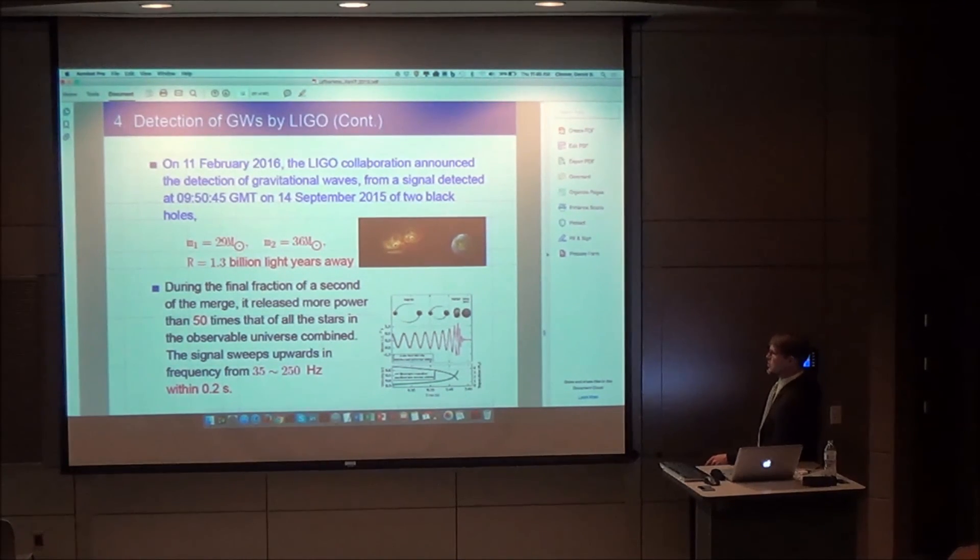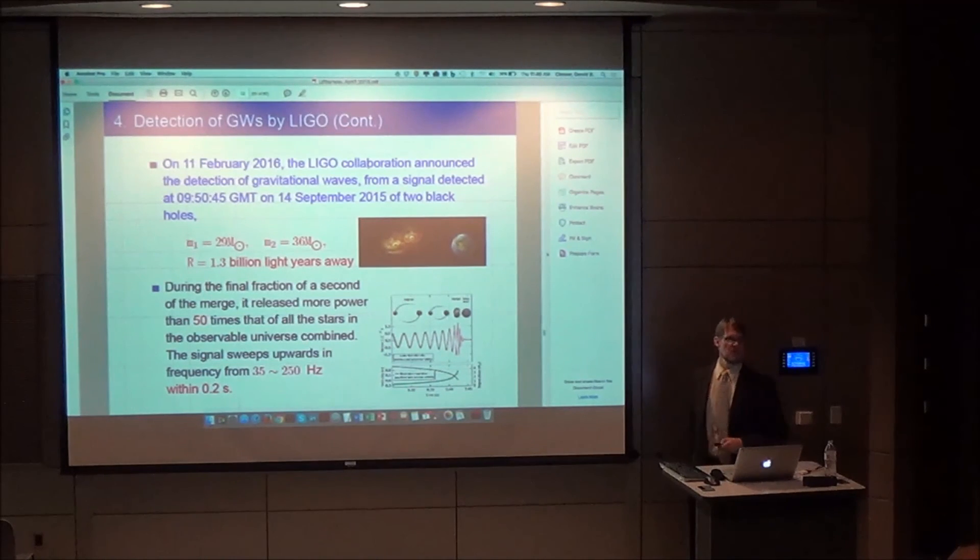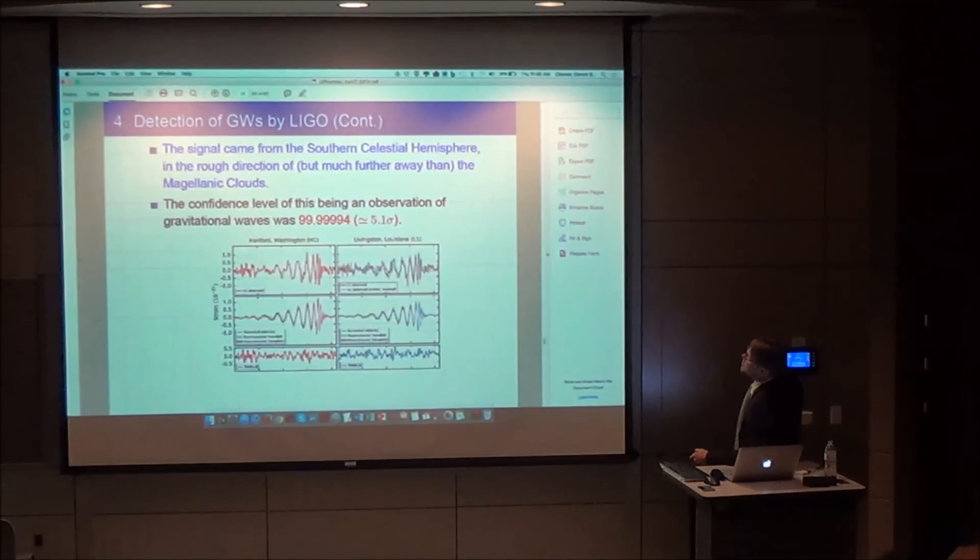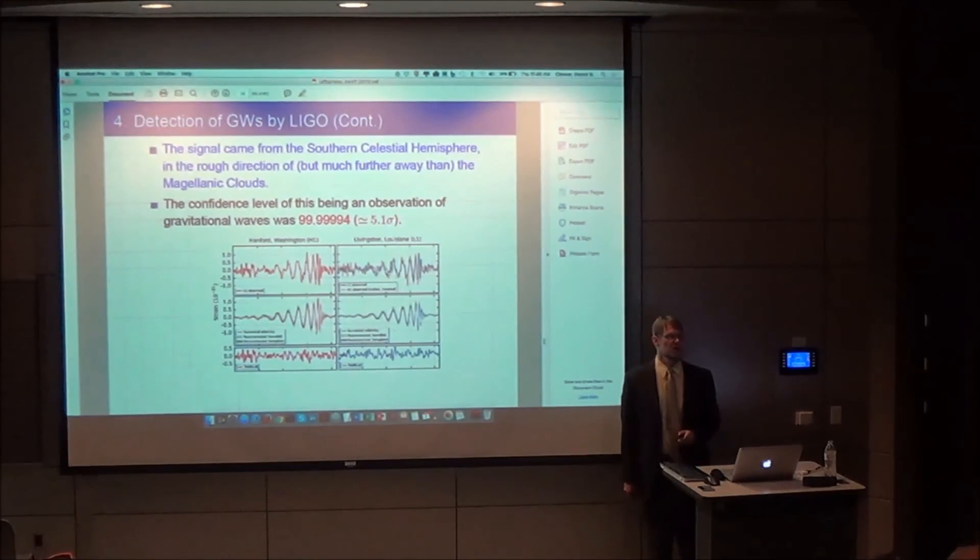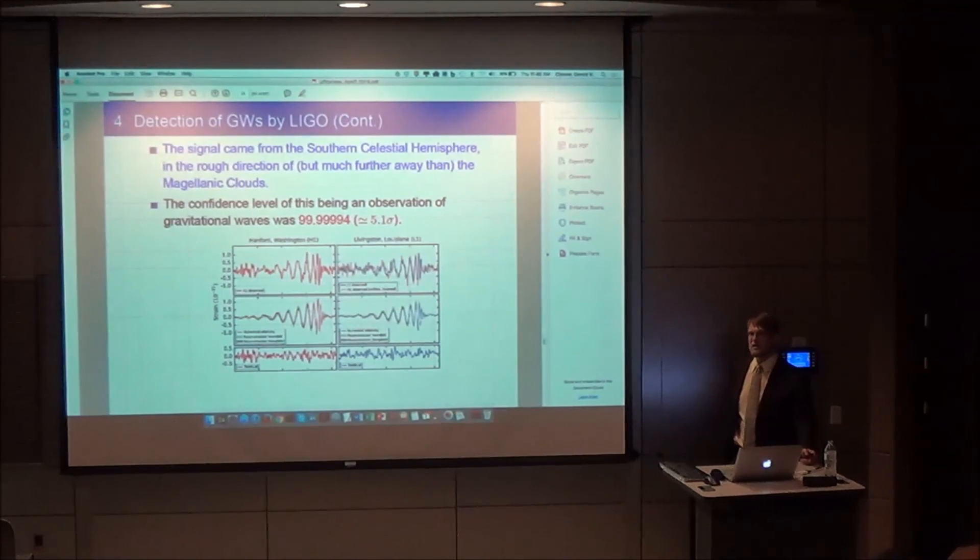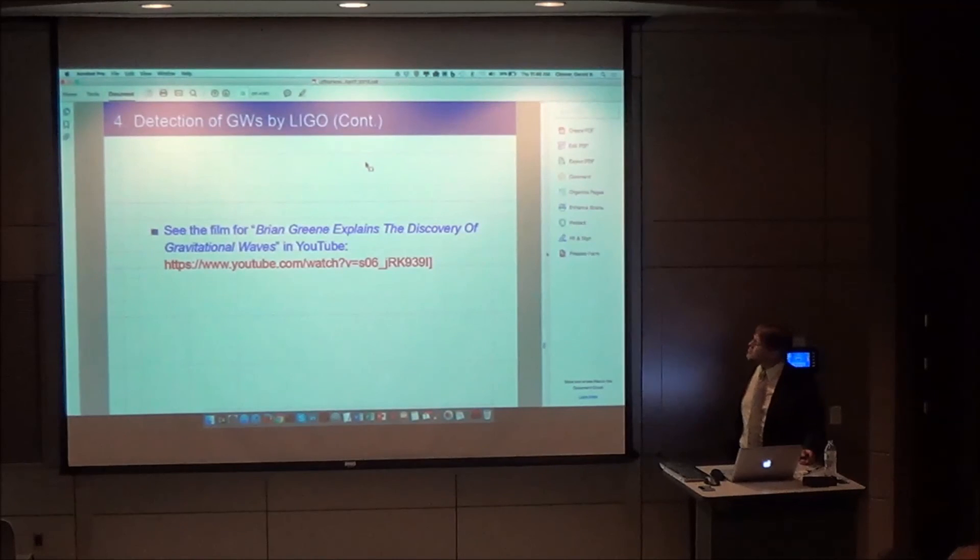During the final fraction of a second of the merger, it released more power than 50 times that of all the stars in the observable universe combined. That's how much energy. But so far away and so long ago that it was so weak that it gets down to us. The power per unit area goes as 1 over r squared. So four times away, the energy we would detect decreases by a factor of 16. This is 1.3 billion light years away, so the power we detected had decreased by a factor of 1.3 billion light years squared. The signal sweeps upward in frequency from about 35 to about 250 hertz within two-tenths of a second. Now they predict they will be detected about one collision per month.